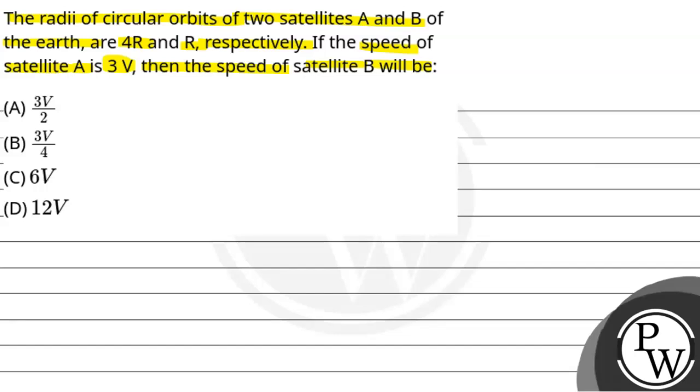So now we have the radius of circular orbit for the two satellites A and B around the Earth as 4R and R. Satellite A has radius of 4R and B has radius of R. The speed of satellite A is 3 times V. We need to calculate the speed of satellite B.